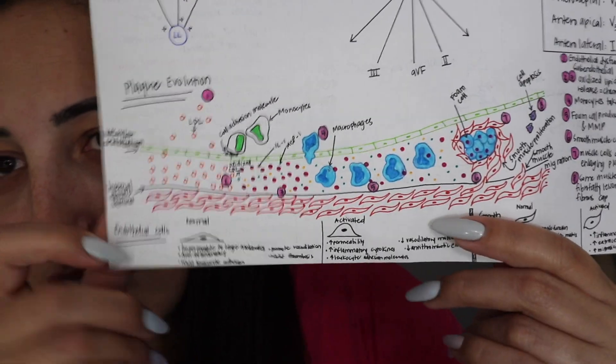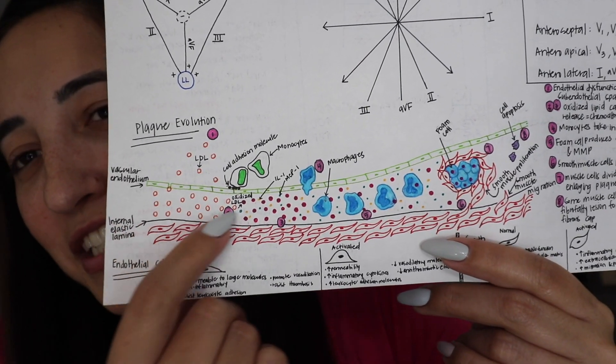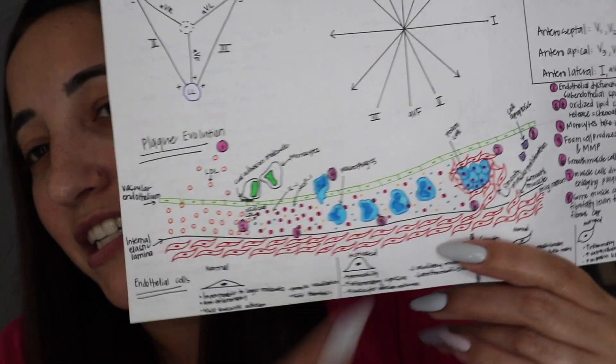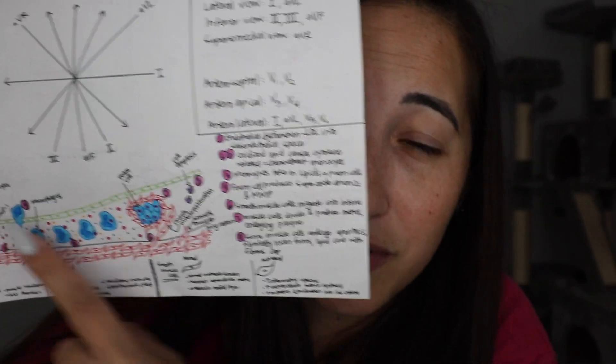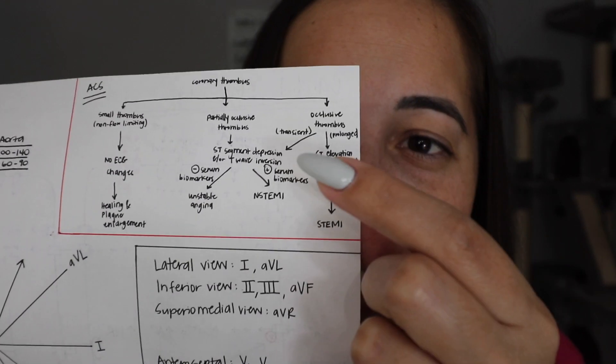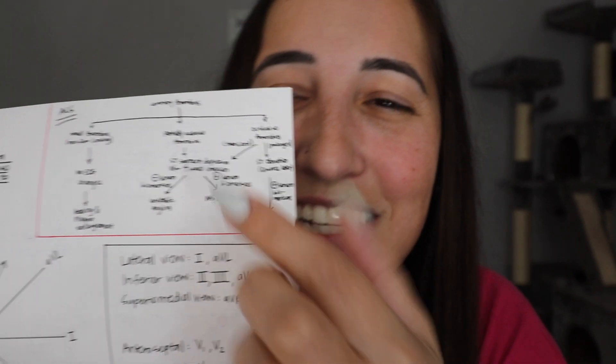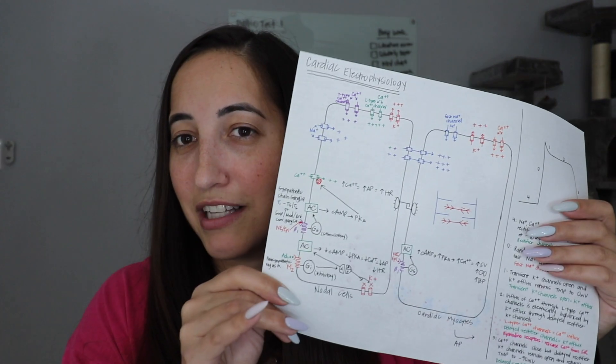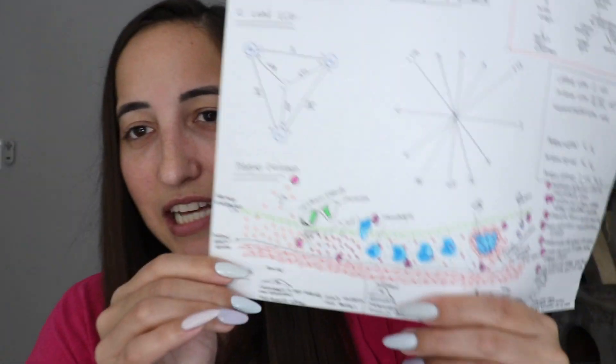Look how pretty this is — this is the pathophysiology of plaque formation in an artery, so atherosclerosis. Over here are the steps, one through eight, labeled here. And up here I've written in tiny letters the coronary thrombosis of acute coronary syndrome — like an NSTEMI, STEMI, or unstable angina. I tried to keep my concept map condensed to one page so I can reference it for the major parts of the lectures. These are very time-consuming, but I feel like I need it to survive.